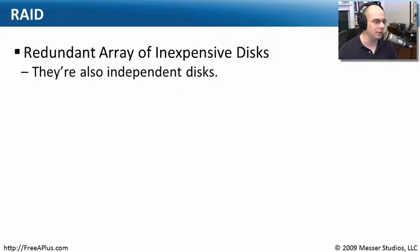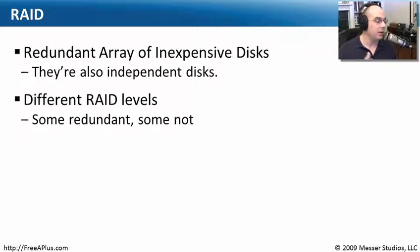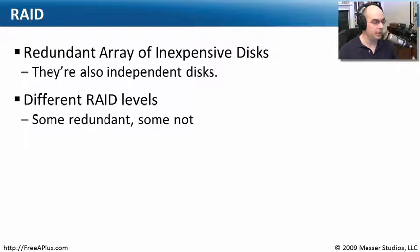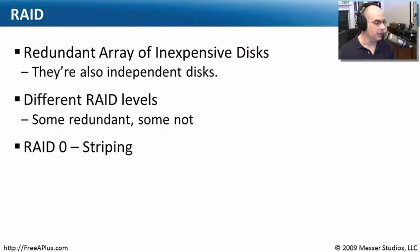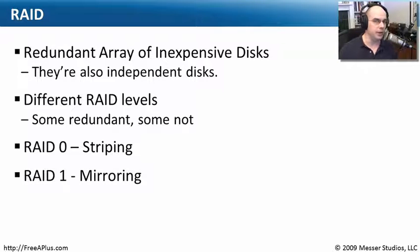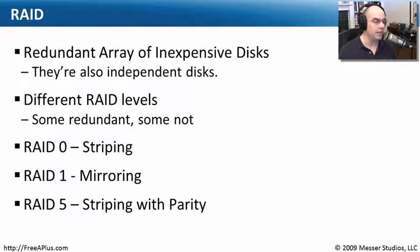So "independent" is probably a little more explanatory about what we're really doing with our disks. There are different levels of RAID, and just because something is running at a certain RAID level doesn't mean it's redundant — it may be running at a level that does not support redundancy. Not all RAID levels protect you if a disk fails. We're going to talk about RAID 0, also called striping; RAID 1, called mirroring; and RAID 5, which is striping with parity.